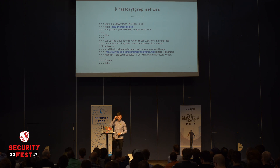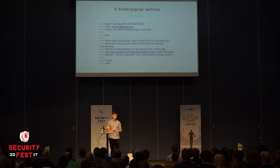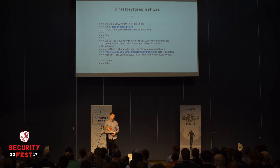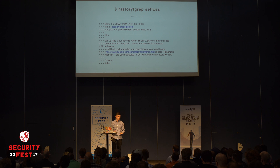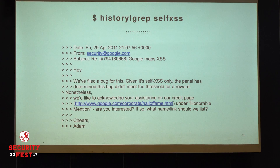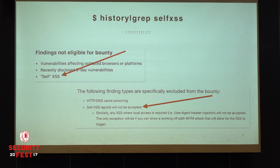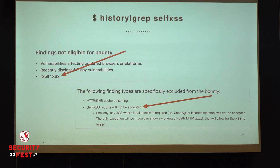Nowadays, when people create their bug bounty program descriptions, they don't usually write all of it themselves — they take text from another company or from a boilerplate. So most bug bounty programs look like this in their description: 'Not eligible for bounty: self-XSS,' or 'Self-XSS reports will not be accepted.' And I would like to challenge that view, because as you could clearly see, this is very much exploitable given the right preconditions. That was reflected — let's talk about stored self-XSS.